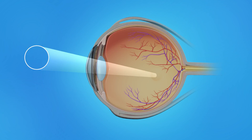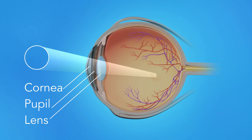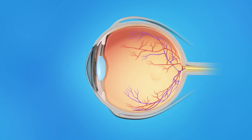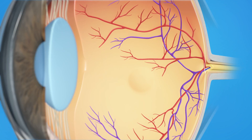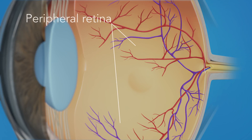Light rays enter the eye through the cornea, pupil, and lens. These light rays are focused on the retina, the light-sensitive tissue lining the back of the eye. The retina has two areas: the peripheral retina, which gives us our side or wide-angle vision, and the macula, the small area at the center of the retina. The macula gives us our pinpoint vision, allowing us to see detail clearly.